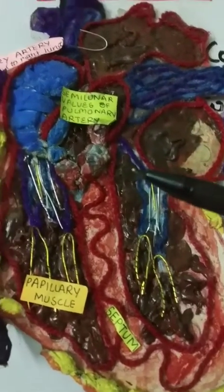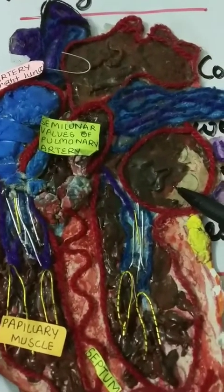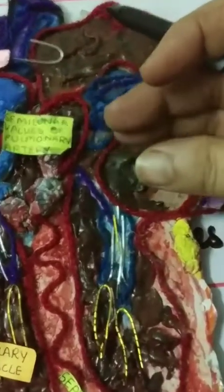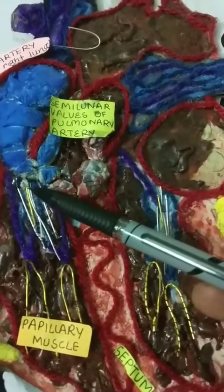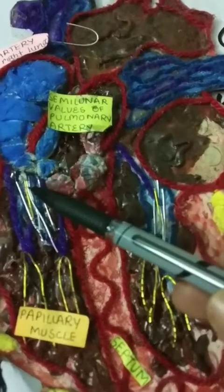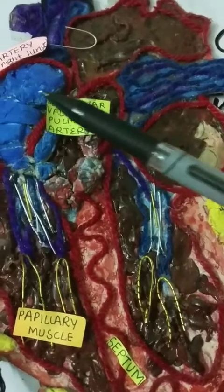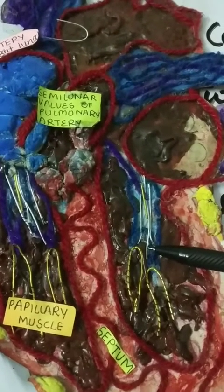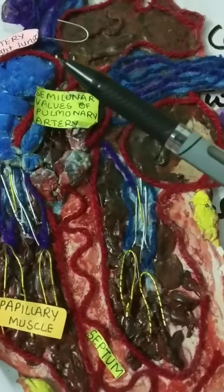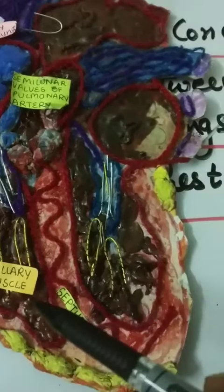Then both auricles contract together. The valves present in the heart open, allowing blood from the left auricle to come into the left ventricle, and blood from the right auricle to come into the right ventricle.